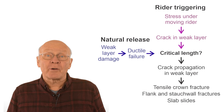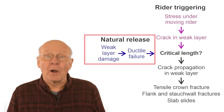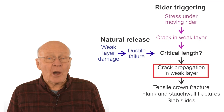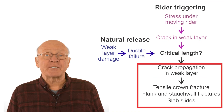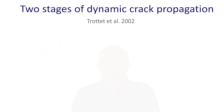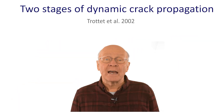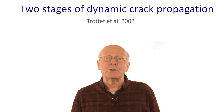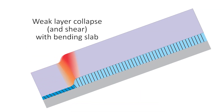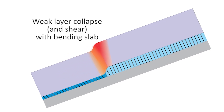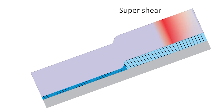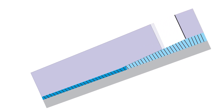Regardless of whether the crack was caused by a ductile failure or the brittle crack under a rider, if the crack is long enough, it will propagate freely away from the trigger point. The latter stages of crack propagation and slab release are the same. Recent research by Joanne Gome and colleagues has shown there are two stages to dynamic crack propagation. The first stage involves substantial collapse in the weak layer, which is driven by a bending wave in the slab. In the second stage, called super shear, tension in the slab drives shear crack propagation in the weak layer.